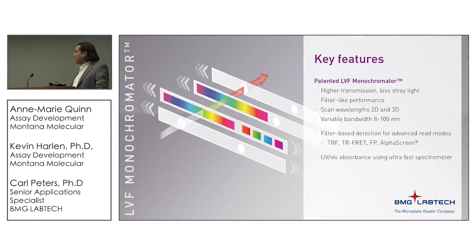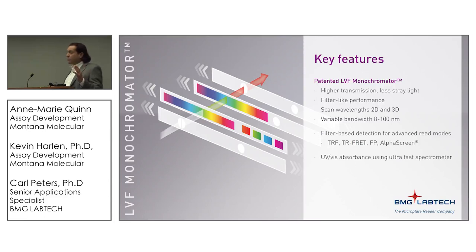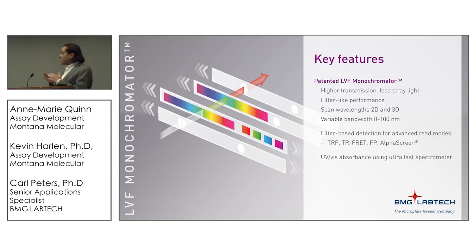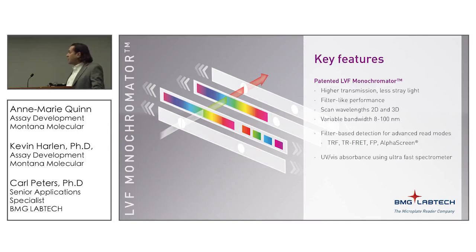The key feature of the ClarioStar was the patented linear variable filter monochromator — literally glass slides that let you select the rising and falling edge of the wavelengths passing through. It has very good light transmission, providing filter-like performance while retaining the selectability to do the two different wavelengths for red and green proteins. For development purposes, you can do excitation-emission scans to focus in on appropriate wavelengths. It can also be used filter-based for highest sensitivity, especially in cell-based assays.